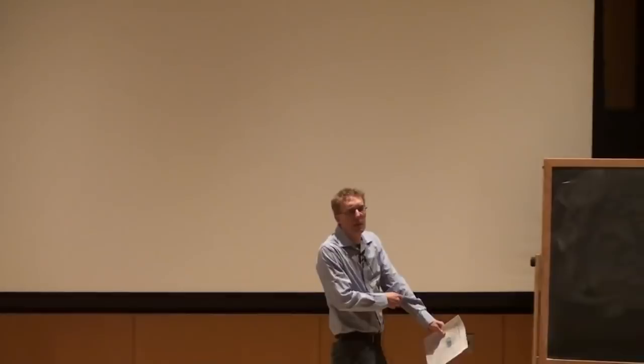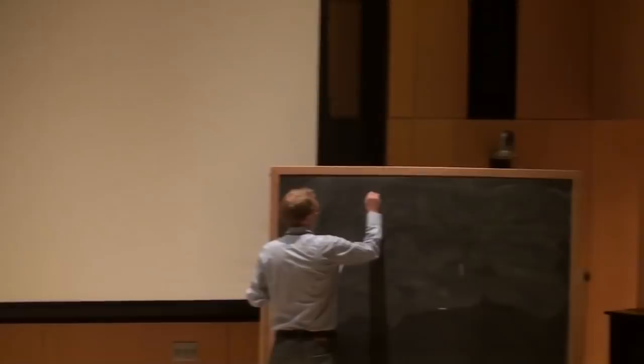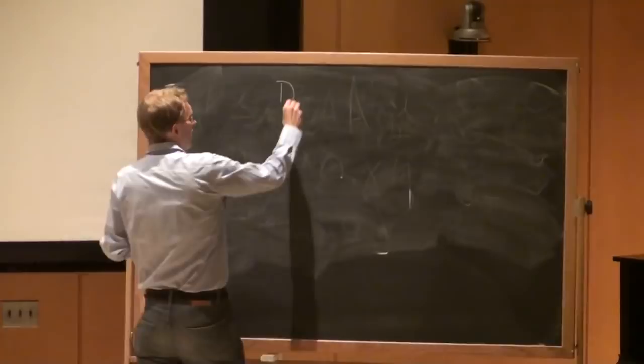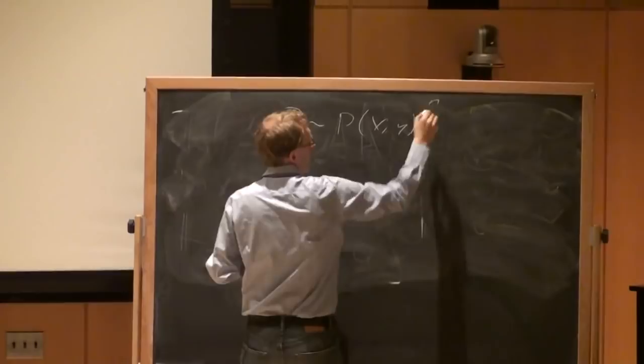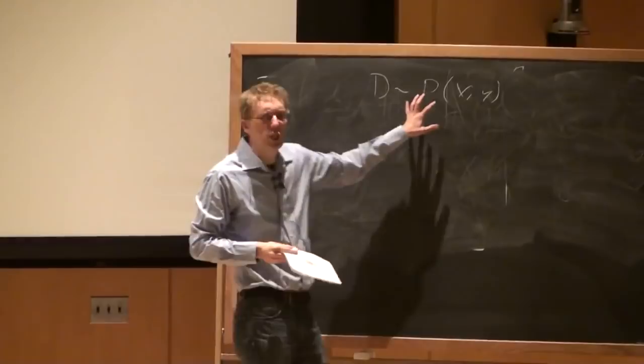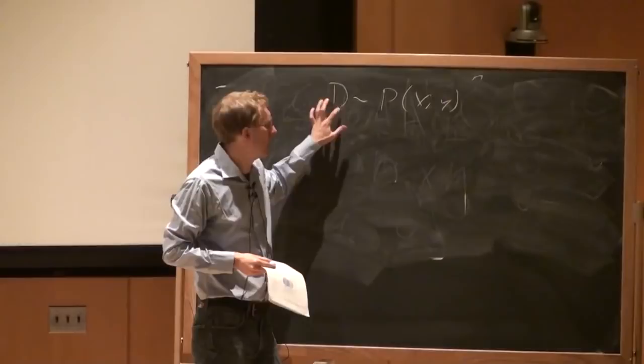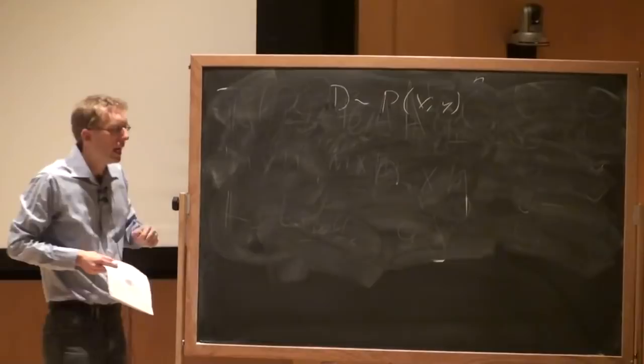So last time we talked about the following: in machine learning you usually have a dataset D that is drawn from some distribution P(X,Y). We have n data points — these are i.i.d. draws making up our training data. This distribution will forever remain elusive to us — it's something we don't know.